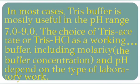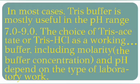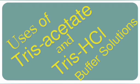In most cases, Tris buffer is mostly useful in the pH range seven to nine. The choice of Tris-acetate buffer or Tris-HCl buffer as working buffer solutions, including the molarity and pH, depends on the type of laboratory work and uses of the buffer.